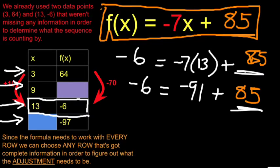And having created a complete formula, now I can use the formula to fill in any other blanks that I left in the rows. So for example, when x is 9, now let's do the mathematics: negative 7 times 9 plus 85, enter, get an answer.